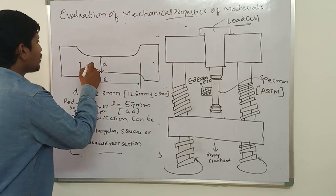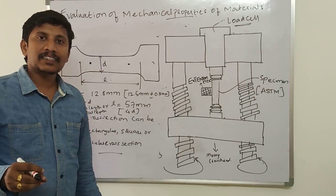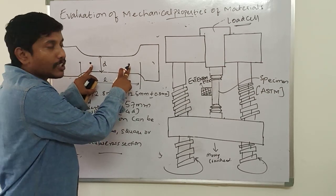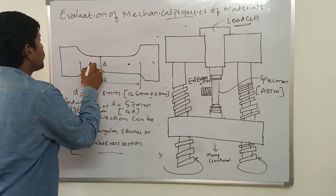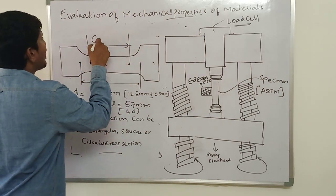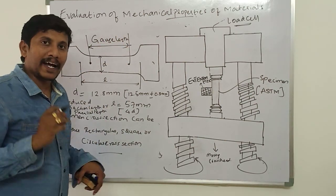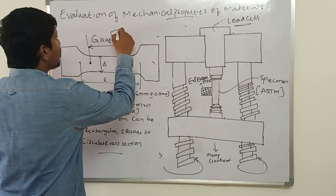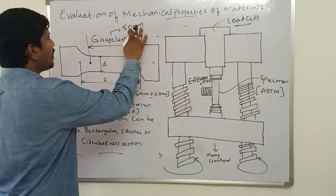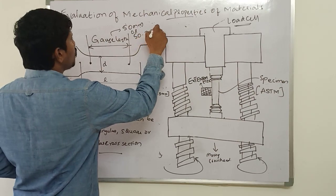In evaluating properties like yield strength, ultimate tensile strength, and percentage of elongation, we consider 2 permanent marks on the specimen. The distance between the 2 permanent marks is called the gauge length. As per the ASTM standards, the gauge length is considered as 50 mm, or 50.2 mm.